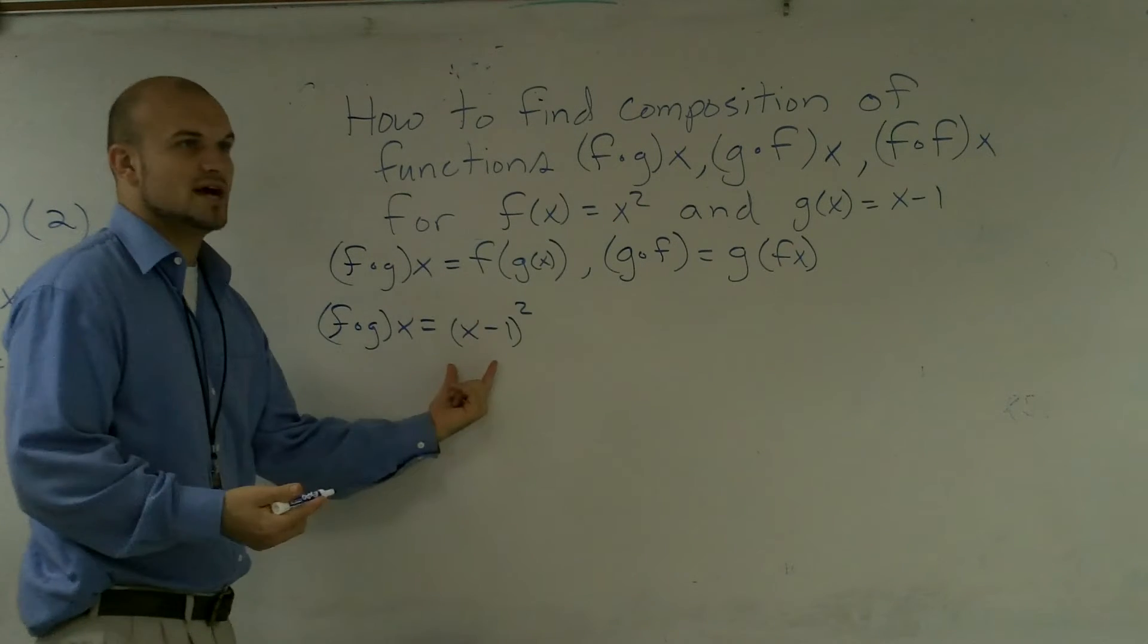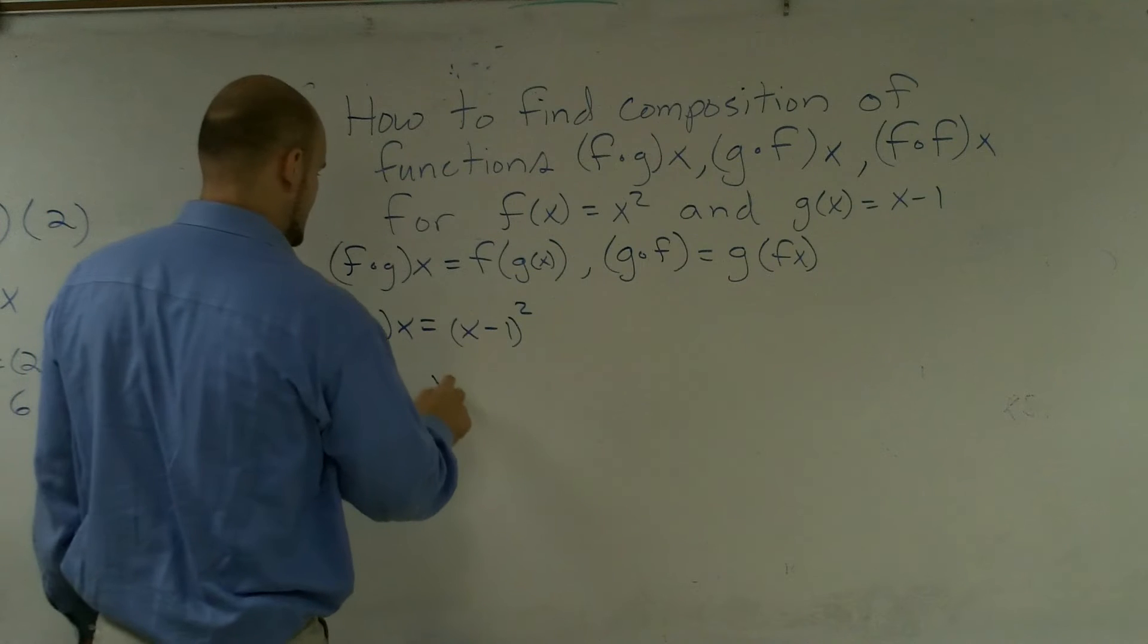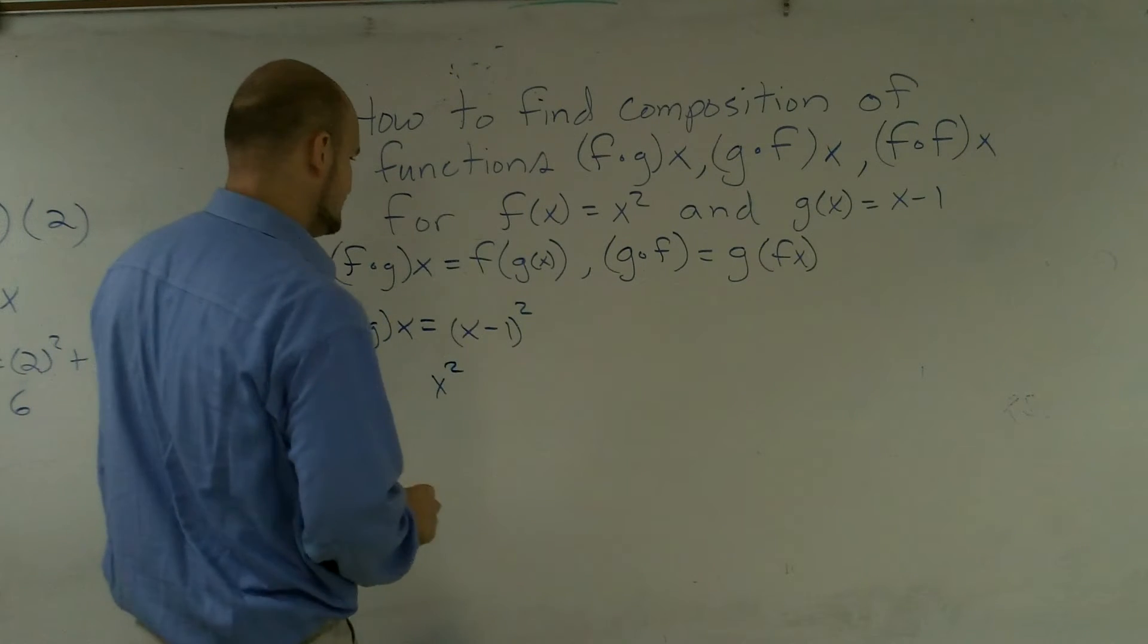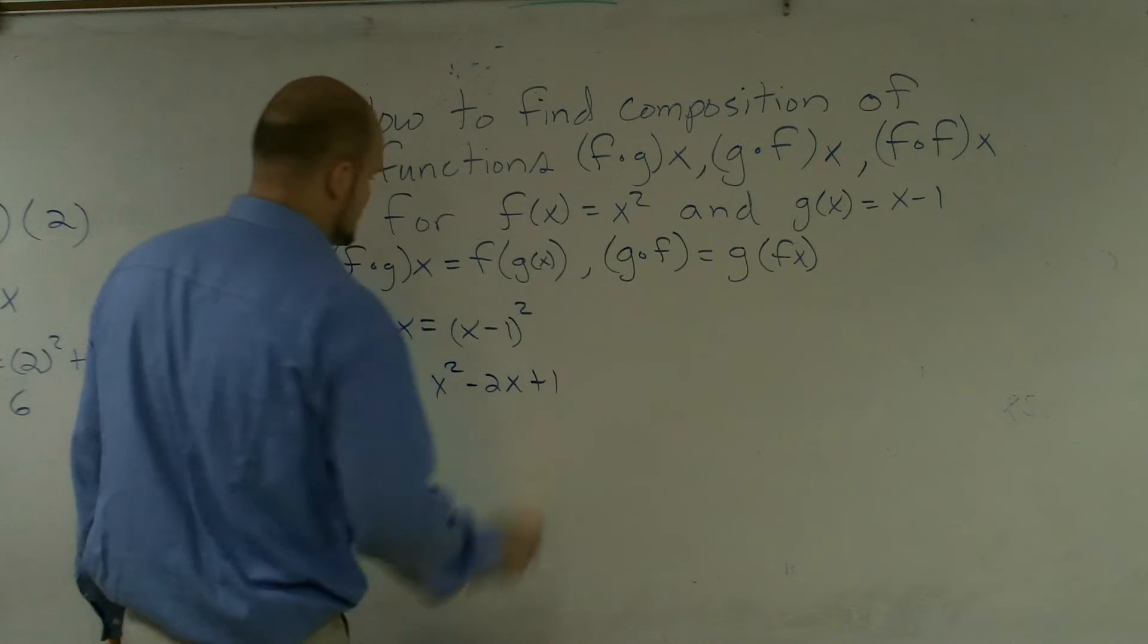And then therefore now I just square this, which would become x squared minus 2x plus 1.